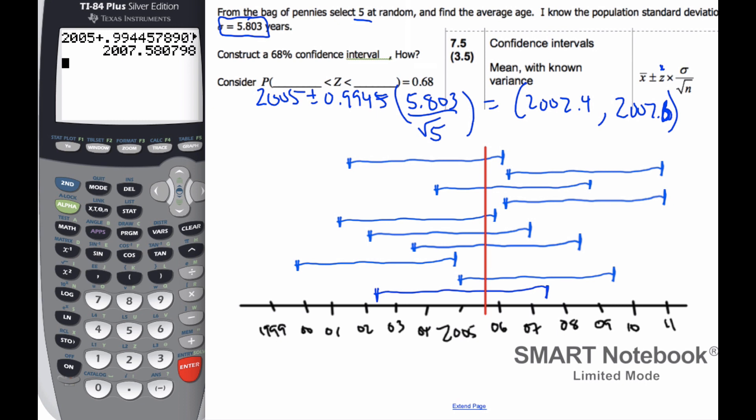That is what we are confident of. And so we know that if I look at this, here's captured, not captured, captured, not captured, captured, captured, captured, not captured, captured, and captured. And so of these 1, 2, 3, 4, 5, 6, 7, 8, 9, 10, I have 7 out of 10, which is approximately 70%, which is approximately 68% of the confidence intervals captured the true value.